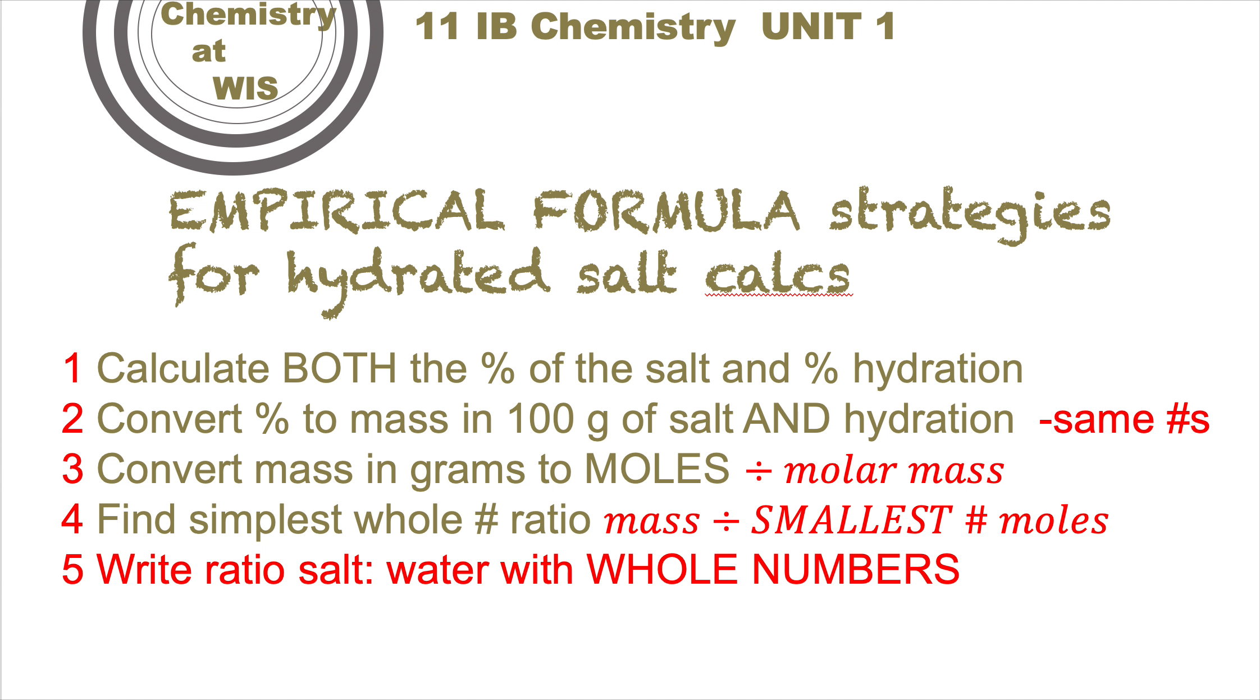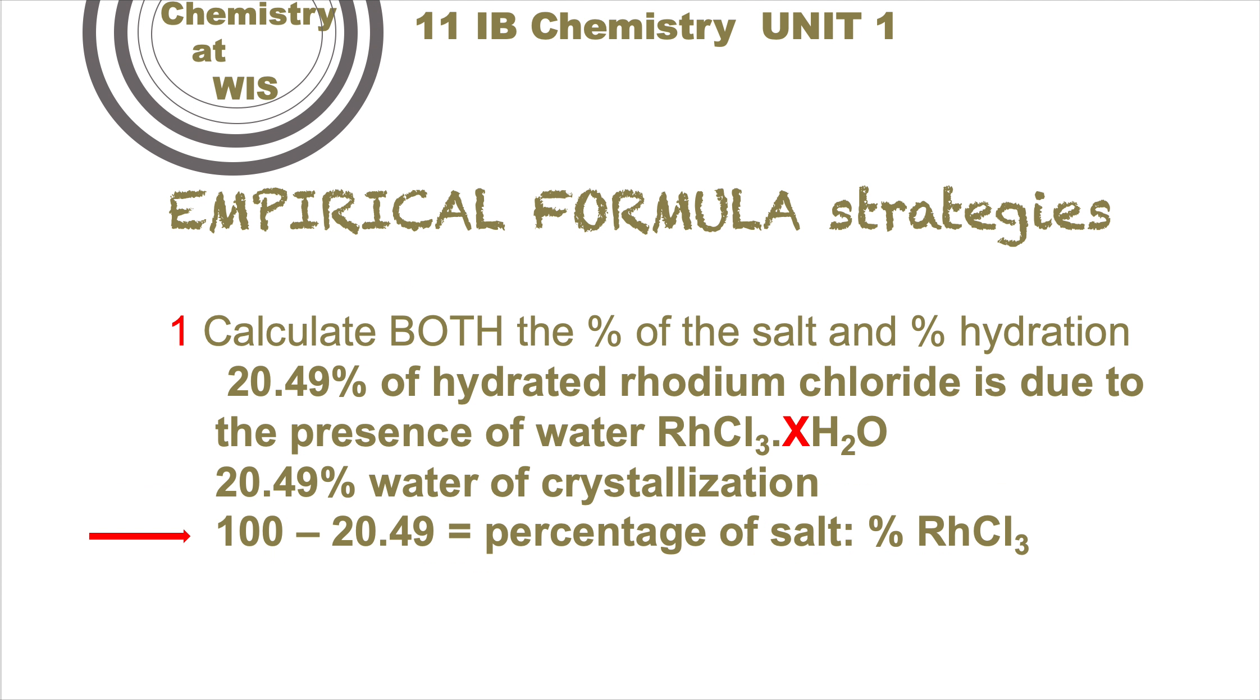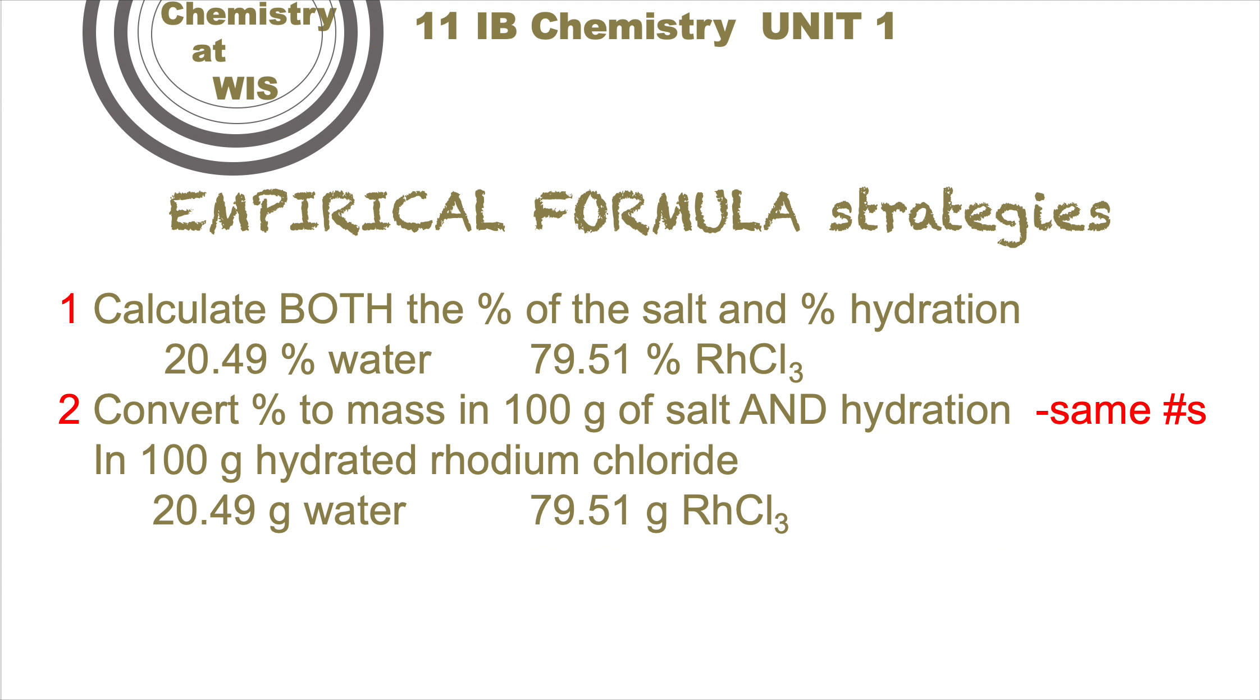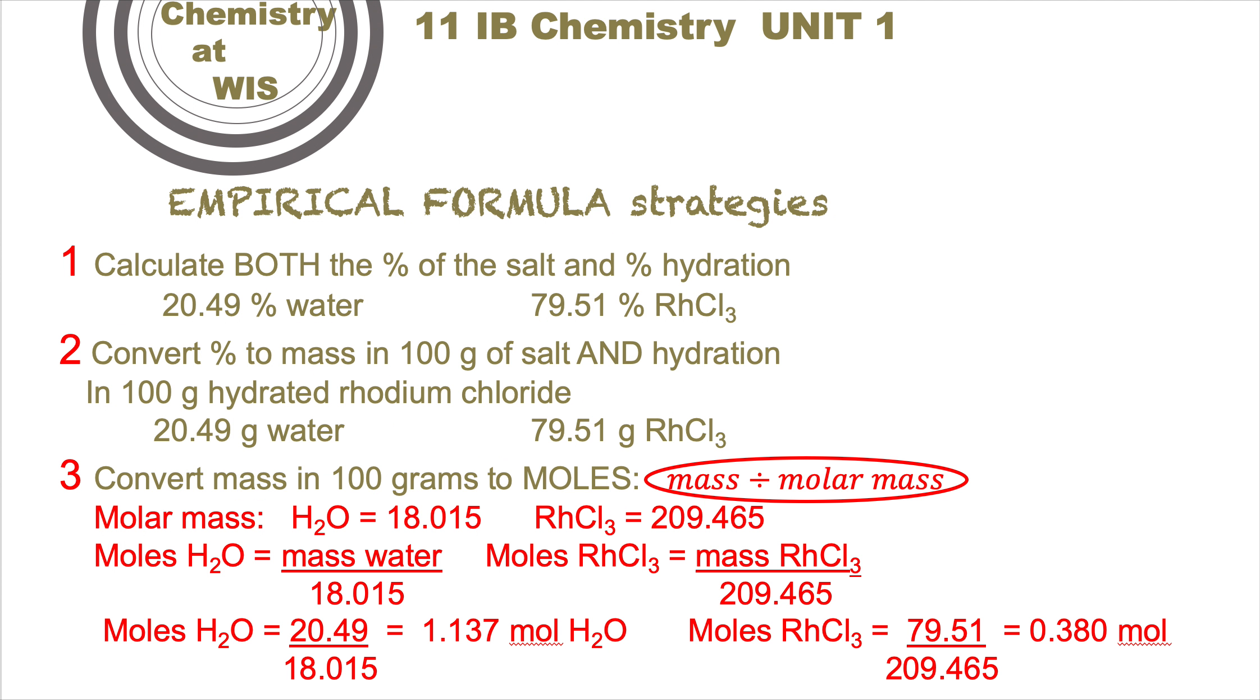Then write the ratio with whole numbers - round up or down. For rhodium trichloride, 20.49% is water, so subtract it from 100 to get the percentage of the salt, which would be the anhydrous salt, giving us 79.51%. Then we convert the percentages to mass in 100 grams - that's going to be the same numbers but with a different unit (grams instead of percent).